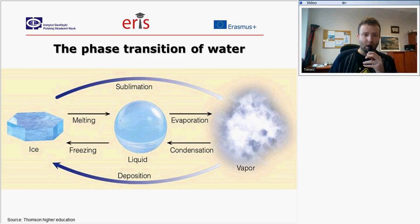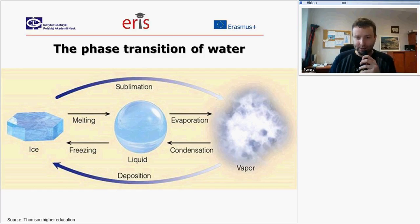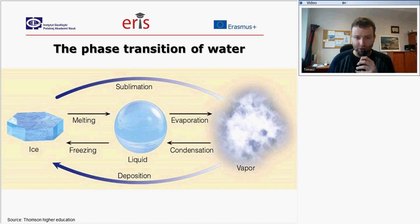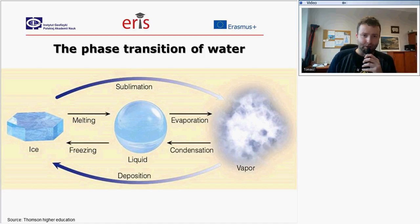These transitions are named here on this chart. Between ice and liquid form, there is melting and freezing. Between liquid and gas form, there is evaporation or condensation. The difference between ice and gas — solid state and gas — is sublimation or deposition.